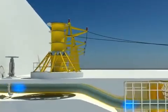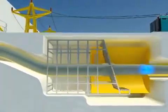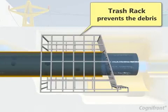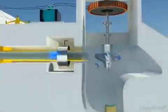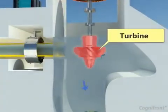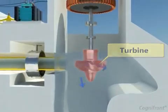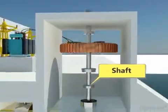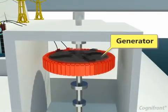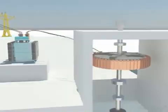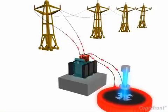A surge tank reduces the excessive water force on the penstock. A trash rack prevents debris from entering the powerhouse. Due to the force of water, the turbine starts rotating, producing mechanical energy. The shaft from the turbine is connected to the generator, which then produces electricity.